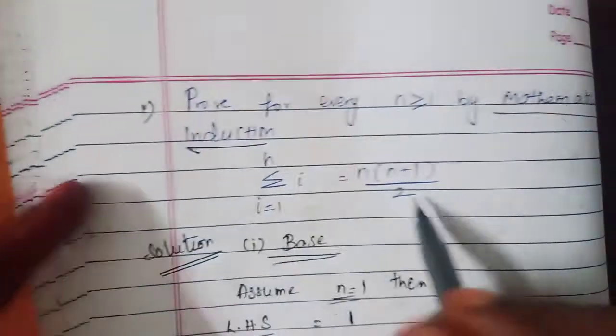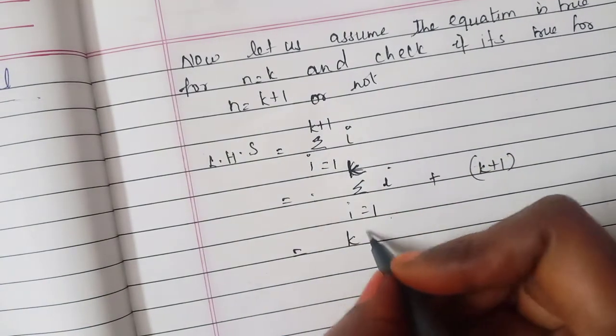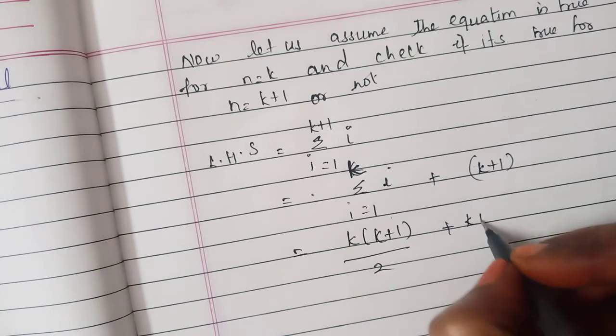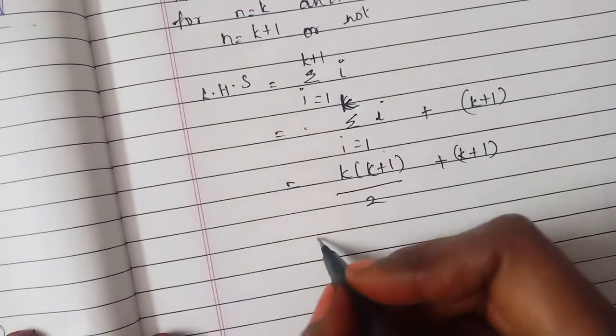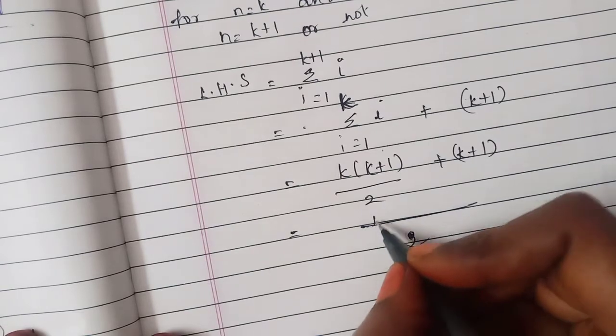So for this n into n plus 1 divided by 2 so here we have to substitute k into k plus 1 divided by 2 and k plus 1.